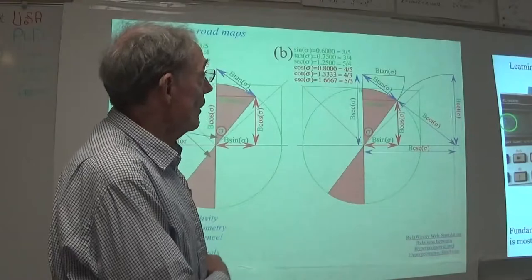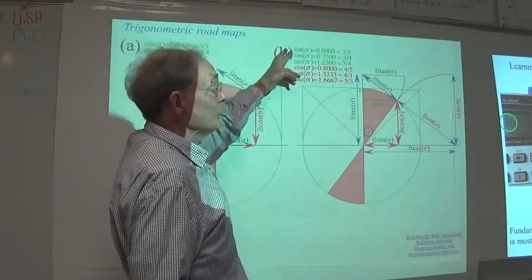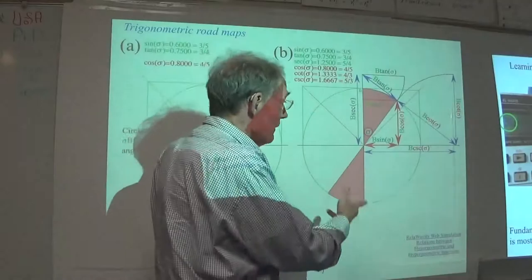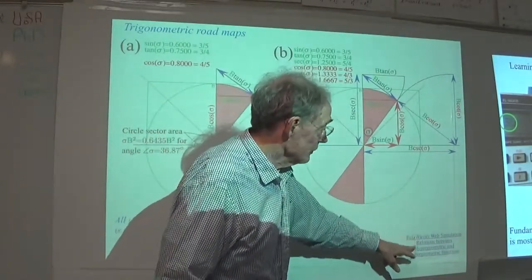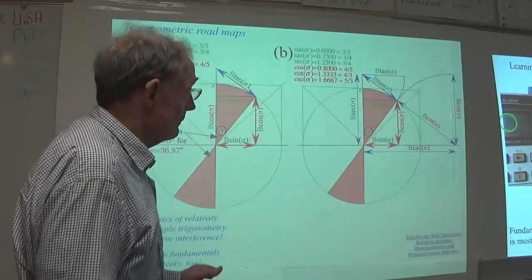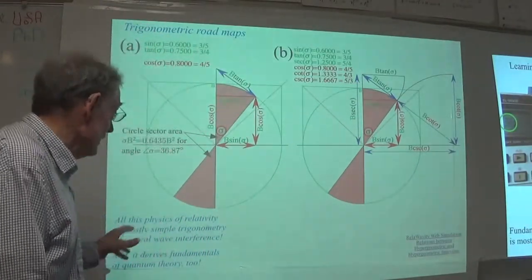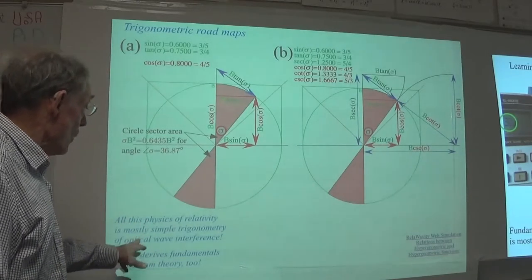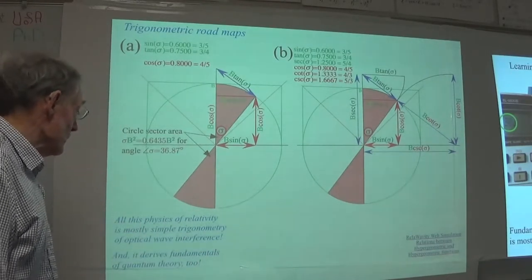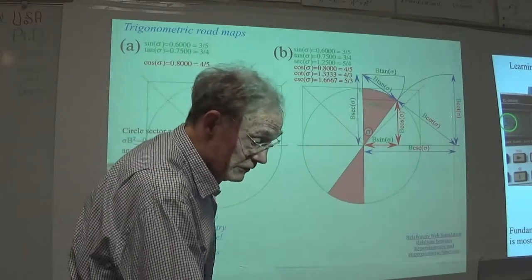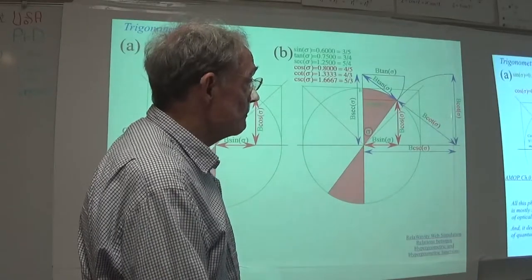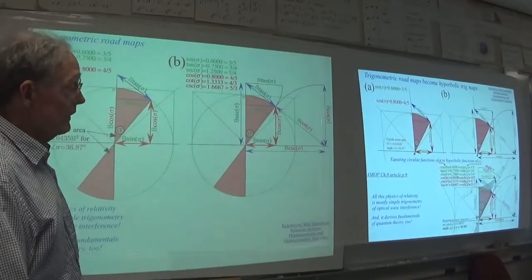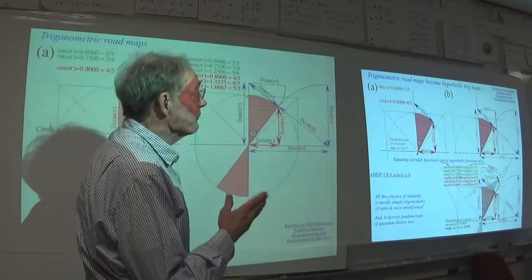The areas indicated in orange here are the actual arguments of the ordinary circular trigonometric functions. You can play with all of this geometry using the applications hyperlinked on the corners of most of these slides. The basic idea is that the physics of relativity, simple trigonometry of optical wave interference or electromagnetic wave interference, then falls right into developing quantum theory. So there's the whole picture of the circular functions and the hyperbolic trigonometric functions.